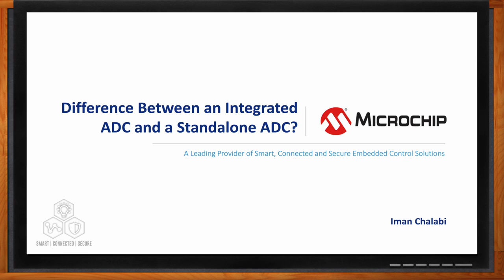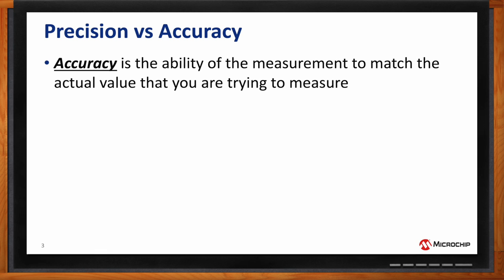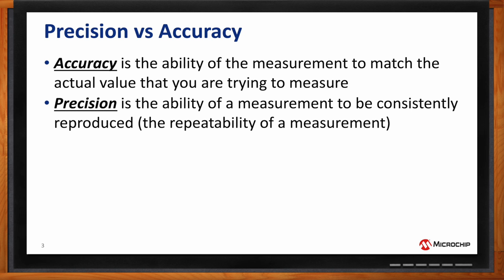It really boils down to the differences between accuracy and precision. Before we dive in, it's important to define those two terms — especially in the context of analog to digital converters, because they are often used interchangeably in the industry. An ADC is a device that converts analog signals into digital signals. The accuracy of an ADC is the ability of its measurement to match the actual value it is trying to measure. The precision of an ADC is the ability of measurements to be consistently reproduced — essentially, the repeatability of the measurements.